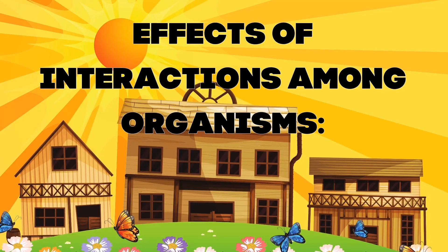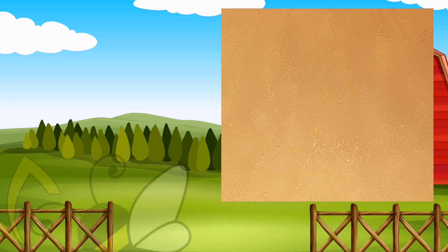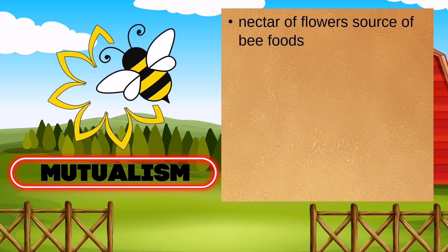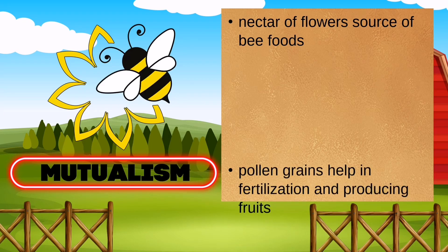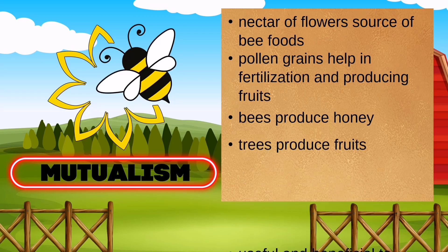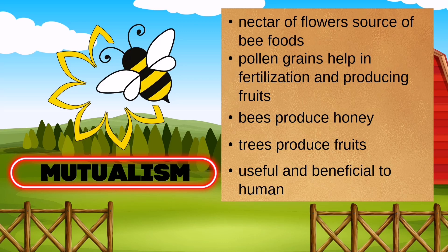So, what are the effects of interactions among organisms? The first interaction is the flower and the bee. The possible effects of this interaction are: nectar of flowers is a source of food for bees; pollen grains help in fertilization and producing fruits; bees produce honey; trees produce fruits — all useful and beneficial to humans.